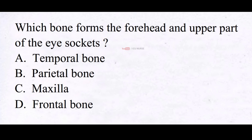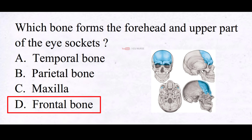Which bone forms the forehead and upper part of the eye sockets? A. Temporal bone, B. Parietal bone, C. Maxilla, D. Frontal bone. And the correct answer is D. Frontal bone. The frontal bone forms the forehead and upper part of the eye sockets.